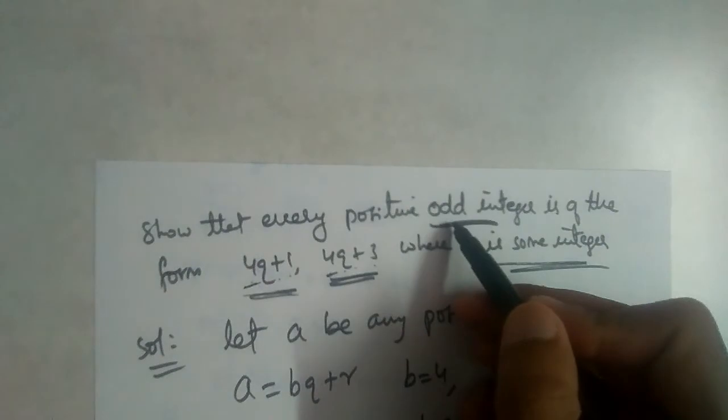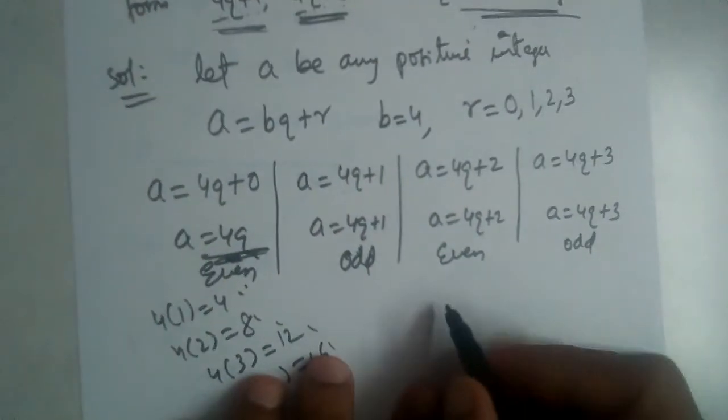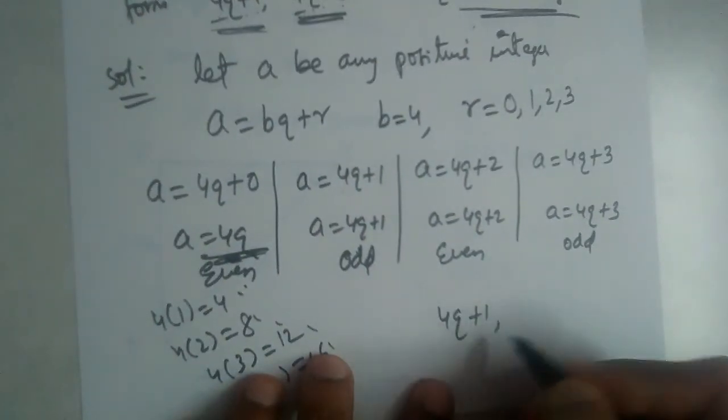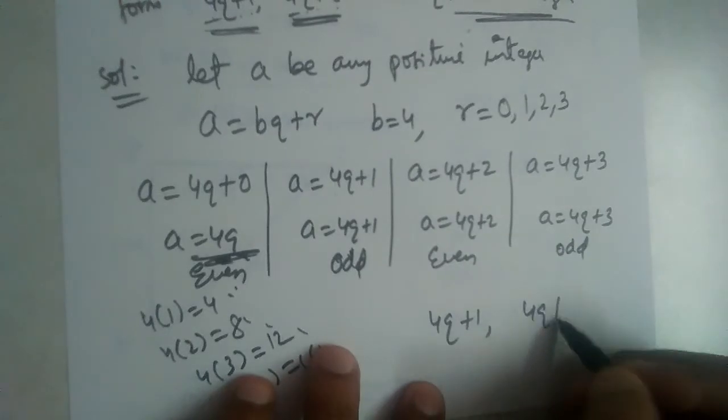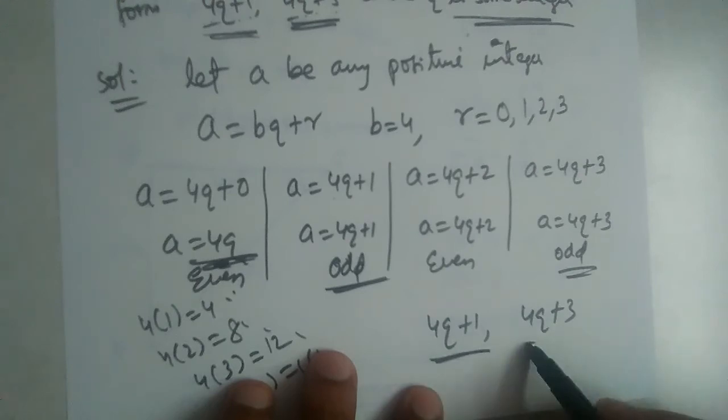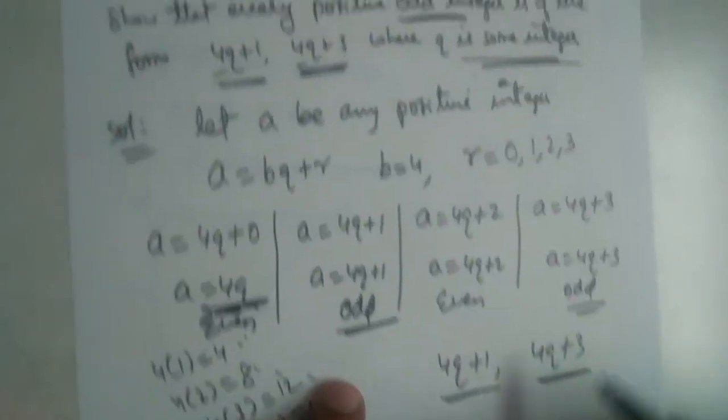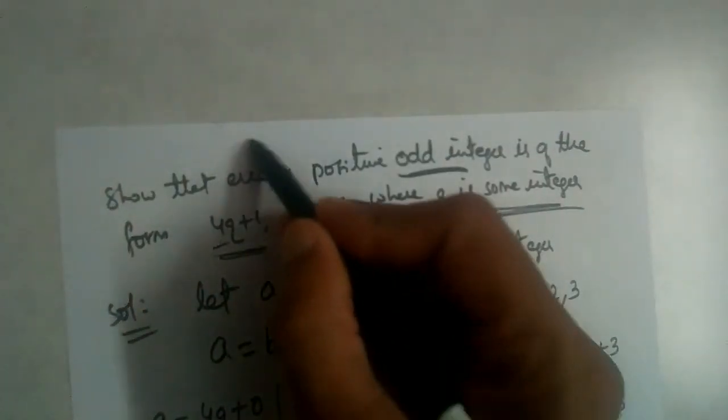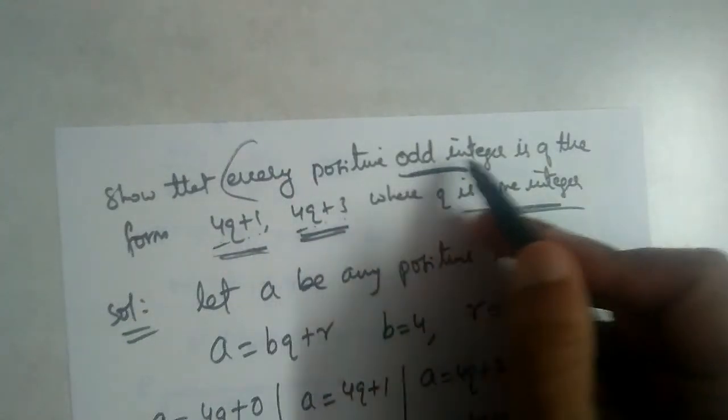We need odd numbers, so take out odd numbers from here. Odd numbers are 4q plus 1 and 4q plus 3. Therefore, every positive odd integer is of the form 4q plus 1 or 4q plus 3.